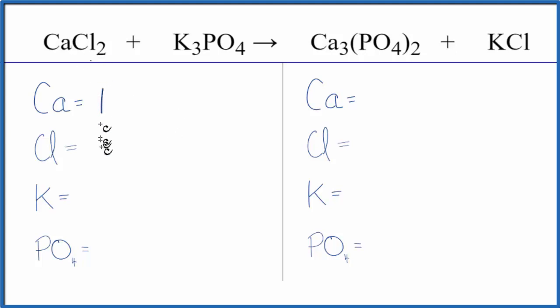One calcium, two chlorines, three potassiums, and here's the trick. We have PO4 here. It's called the phosphate ion. It's a polyatomic ion. So we have phosphate here and we have phosphate here. So we just count it as one item and that makes balancing a lot easier.